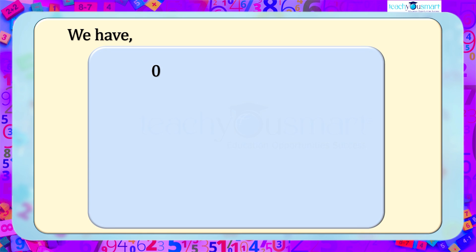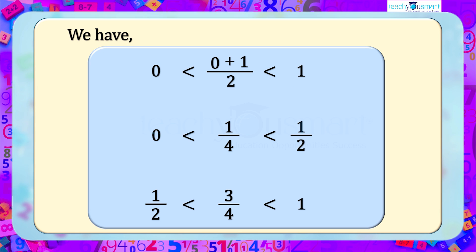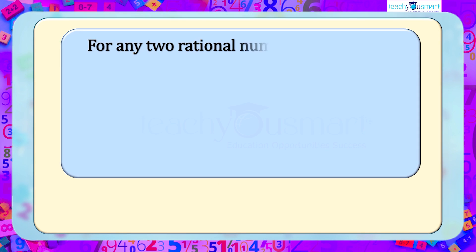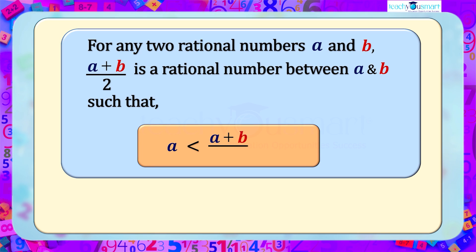Now we have 0 < 1/2 < 1 and 0 < 1/4 < 1. We can write the midterm as the mean of the other two numbers. That is, 1/2 = (0 + 1) / 2. Similarly, 1/4 = (0 + 1/2) / 2, and 3/4 = (1/2 + 1) / 2. So, in general, for any two rational numbers A and B, (A + B) / 2 is a rational number between A and B, such that A < (A + B) / 2 < B.